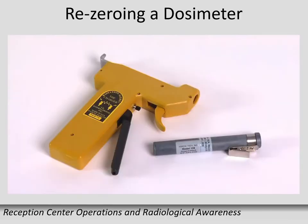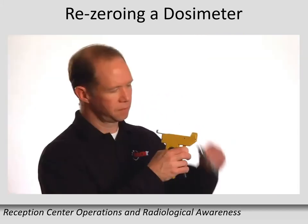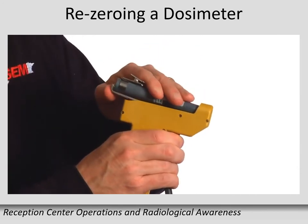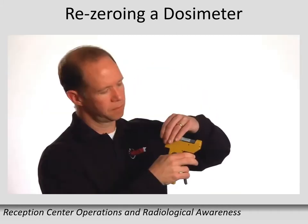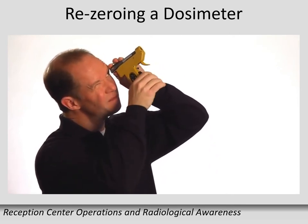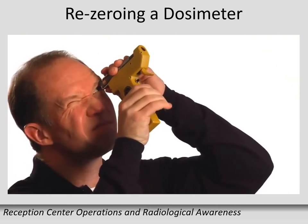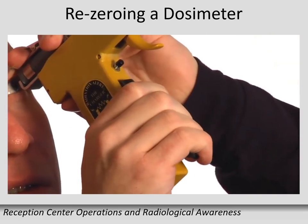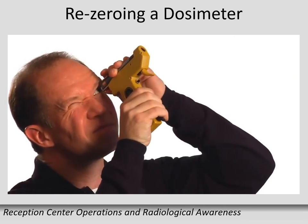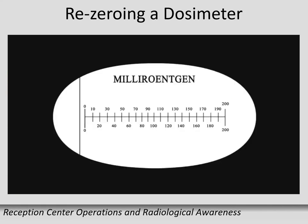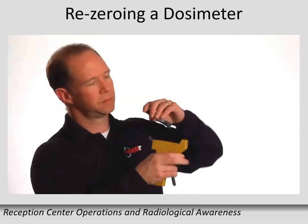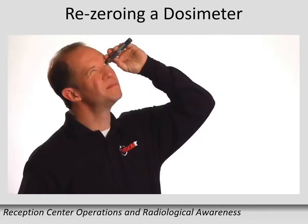To zero your direct reading dosimeter, place the DRD into the charger by squeezing the trigger and inserting the bottom into the metal contacts. With the trigger still squeezed, lift up on the clamp and push it in so it sits tight against the dosimeter, then release the trigger. Point the dosimeter toward a strong light source and hold the clip end to your eye to read the scale. If the line is not on zero, squeeze the lever as many times as necessary to move it back to zero. If no line is present, it means the line is off scale — squeeze the lever several times until it reappears. If the line is below zero, press the small black DC button to move it back toward zero. Once zeroed, squeeze the trigger to release. Recheck the dosimeter immediately after removal to ensure the line has not moved.